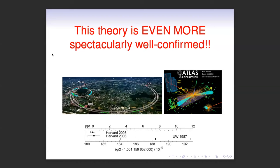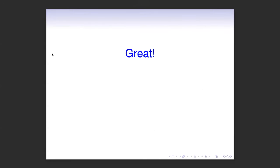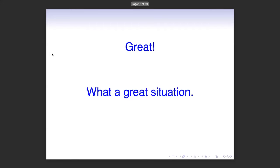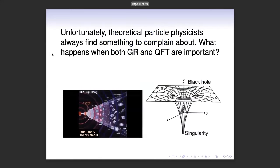Quantum field theory is actually even better tested than general relativity — a really, really well-confirmed theory. The standard model might have small anomalies here and there, but quantum field theory works really well. We just had a talk on g-minus-2, the most accurately measured quantity in science, basically. So we've got two brilliantly confirmed theories. Everything is wonderful. We can predict stuff everywhere we want.